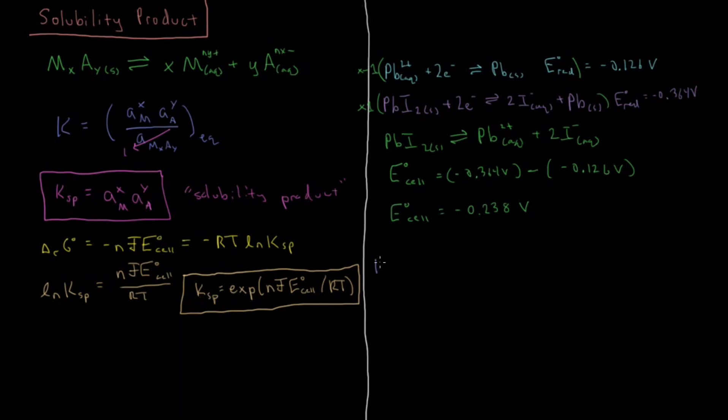So if we plug in those values according to our solubility product, Ksp equals the exponential of how many electrons are going back and forth? 2 times Faraday's constant, 96,485 coulombs per mole, the charge of the electron times Avogadro's number, times E0 cell is minus 0.238 joules per coulomb is a volt. So the joules there canceled with the coulombs there.